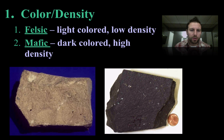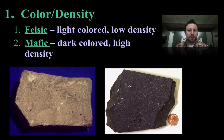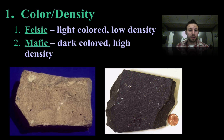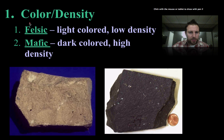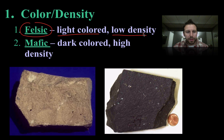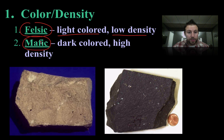One of the first things we can look at is color. When we were discussing minerals, color really is not the best way to help us identify minerals. Well, it does help us a little bit with igneous rocks. There are better things to look at, but we can look at the color and the density of these rocks to help us figure out what they're made of. We know that felsic rocks are going to be light colored and have a low density, versus mafic, which is going to be associated with dark colored and high density.